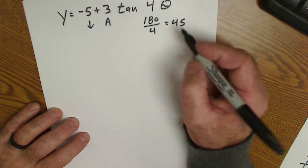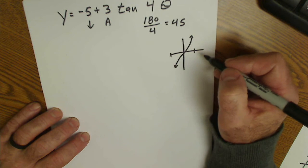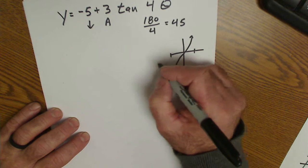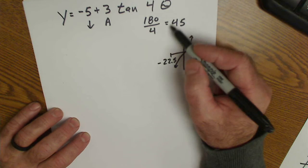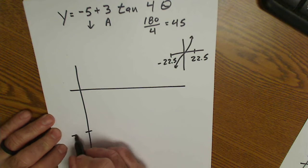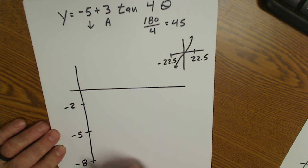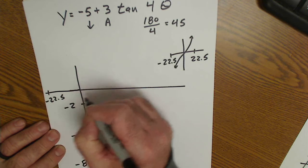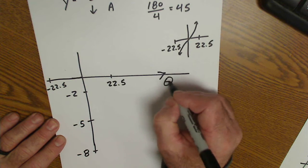Tangent is the only graph I do this with — I draw a little subgraph first. Since tangent usually cycles between negative 90 and 90, a total of 180 degrees, it is now cycling a total distance of 45. So it's going to start at negative 22.5 and end at 22.5. I draw a little subgraph just to take the period into account. We'll sketch that out from negative 5; I go up 3 to negative 2, down 3 to negative 8. There's no phase shift here at all. So it's going to cycle between negative 22.5 and positive 22.5.